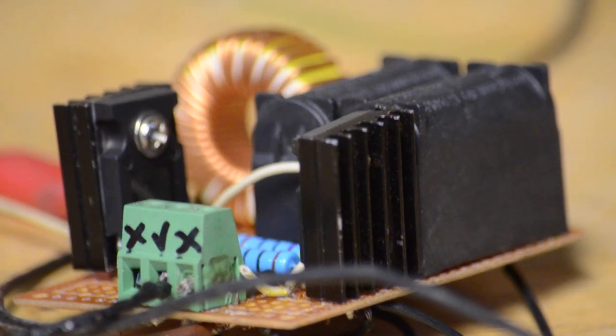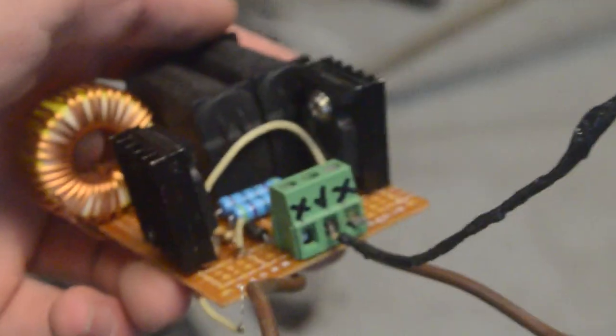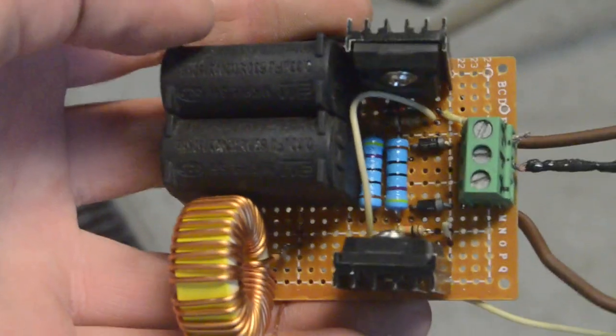In last week's episode, we made a thing called a ZVS driver, and we used it to create high voltage arcs, and so that same ZVS driver is going to be our primary circuit behind our induction heater. So if you want to learn how to make this circuit, go ahead and click on the first link in the description below where you can watch last week's video.